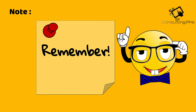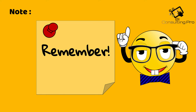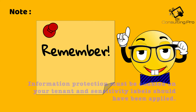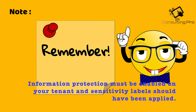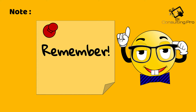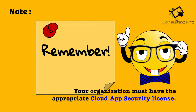When applying sensitivity labels, there are some prerequisites. For the data protection matrix report to be successfully generated, information protection must be enabled on your tenant and sensitivity labels should have been applied. Additionally, in order to access Cloud App Security information, your organization must have the appropriate Cloud App Security license, otherwise these features will not work at all.